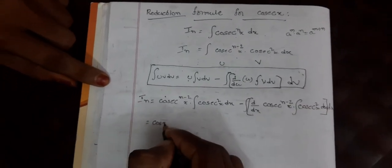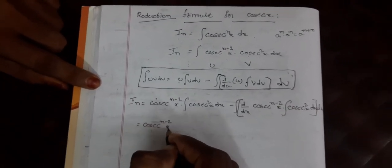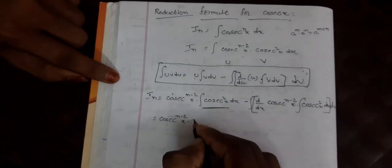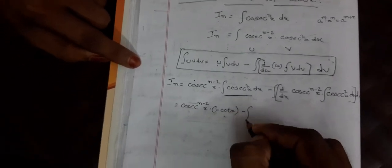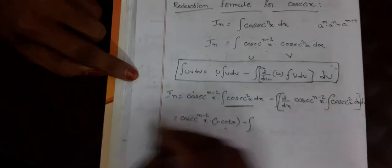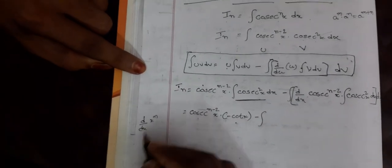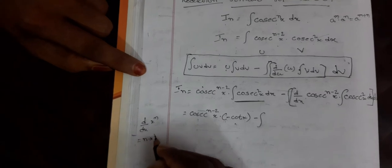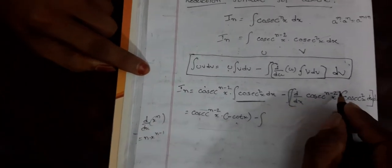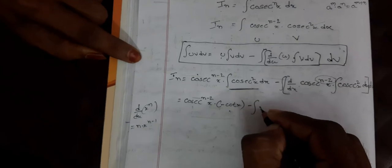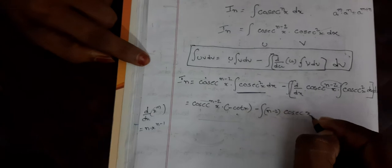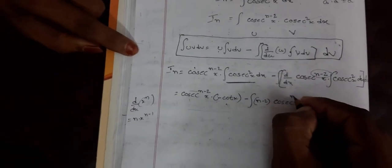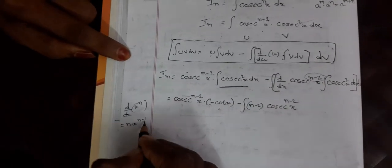The integral of cosecant²(x) is −cot(x). For the derivative part, using d/dx[x^n] = n·x^(n-1), here n means (n−2), so d/dx[cosecant^(n-2)(x)] gives (n−2)·cosecant^(n-2-1)(x) = (n−2)·cosecant^(n-3)(x).